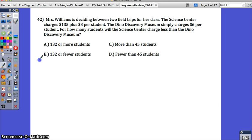We're going to have two things. We're going to have the Science Center and we're going to have the Dino Discovery. The Science Center charges $135 plus $3 per student. Remember, per is going to signify you to multiply. So the Science Center is $135 plus $3 per student. The Dino Discovery simply charges $6 per student. So Dino equals 6 times the number of students.